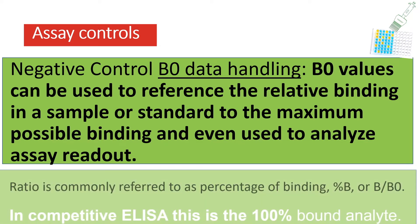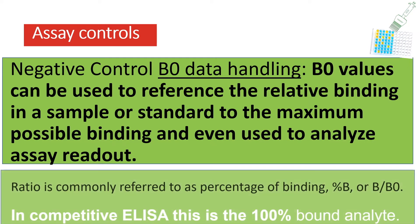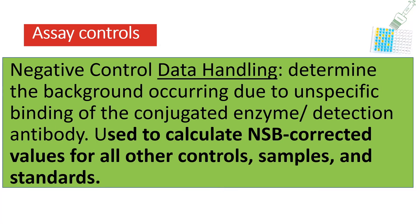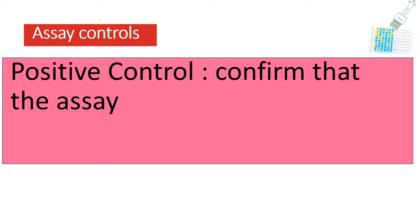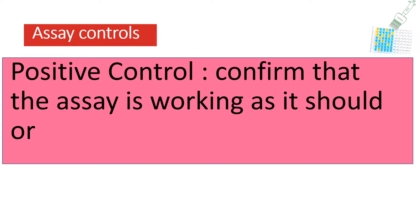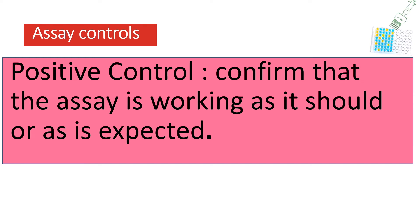In a competitive ELISA, B₀ represents your 100% bound analyte because there is no competitor in the system. In contrast, the NSB well is your 0% binding. That covers negative controls — you also want to include a positive control.